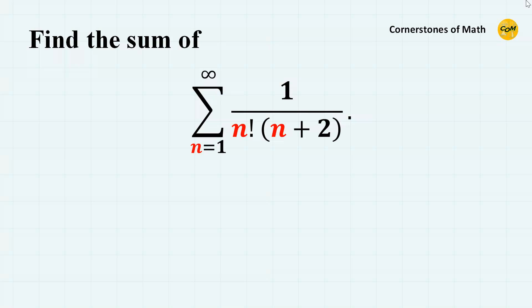Hello, and welcome to yet another video of Cornerstones of Math. Today, we will find the sum of the series sigma 1 over n factorial times n plus 2 from n equals 1 to infinity.